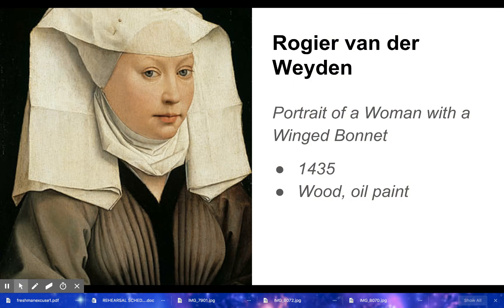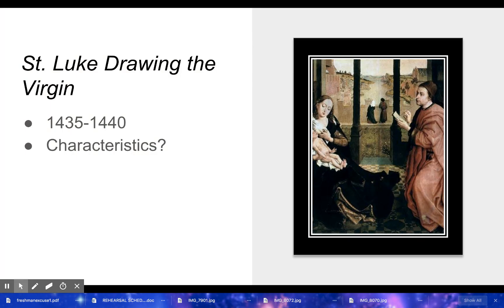We have Roger van der Weyden. He did lots of paintings we'll see here. This one shows individualism — it's a portrait of a woman with a winged bonnet, done in 1435, so pretty early Renaissance. You see light and shadowing and all those things we've already learned about. He also did St. Luke Drawing the Virgin. What characteristics do you see here? Look at the floor, look at the buildings.